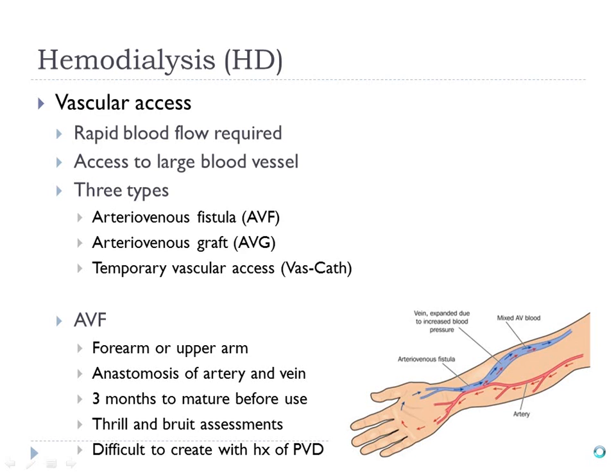To perform hemodialysis, we need vascular access. We need a large vessel because we have to exchange blood very quickly and in large amounts. There are three main types of vascular access for hemodialysis. The one you'll see mostly in the hospital in acute situations is a VASCAP, which is basically a central line.